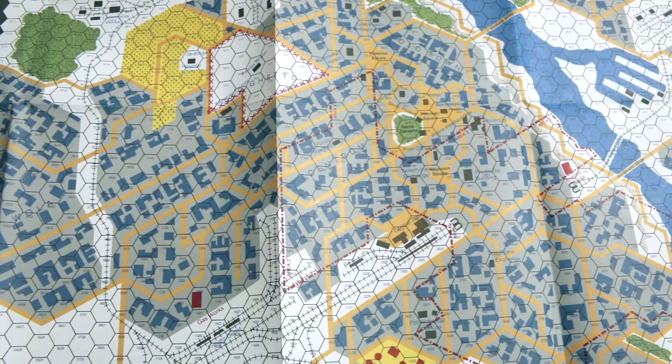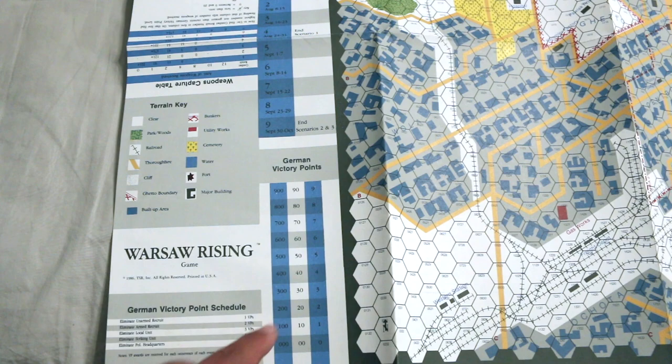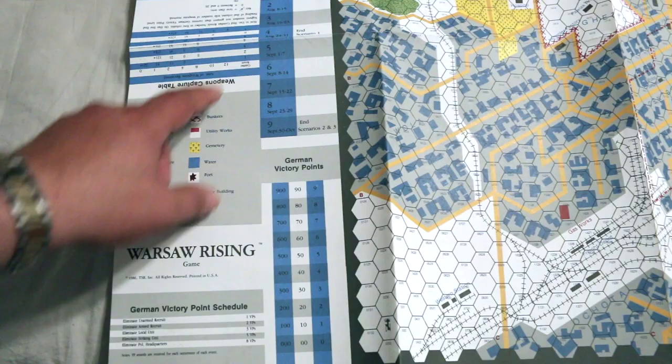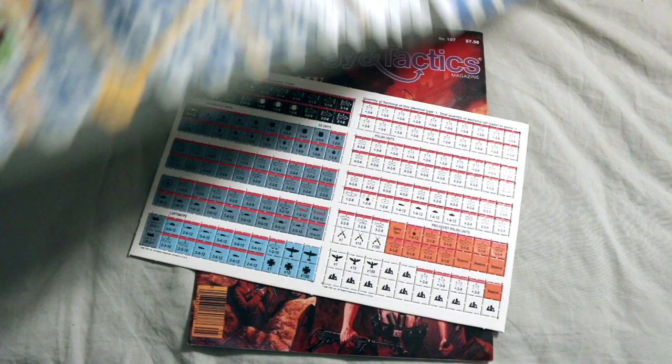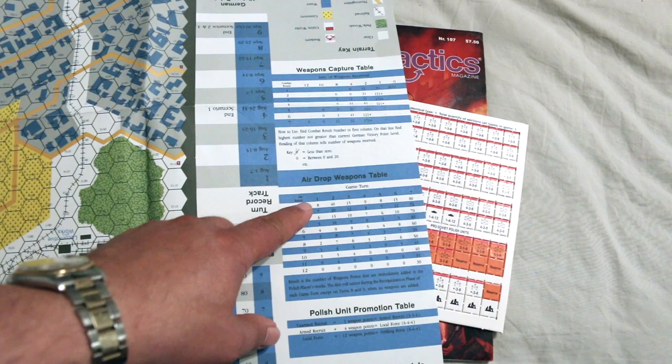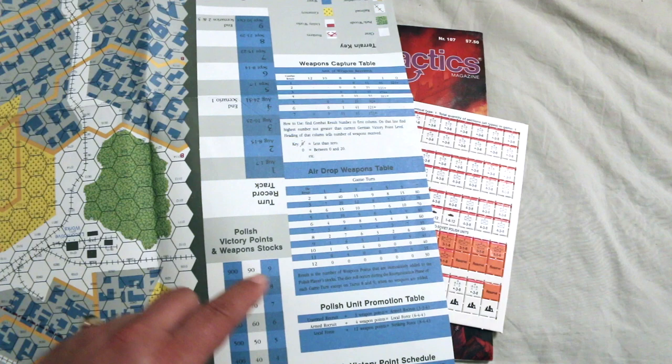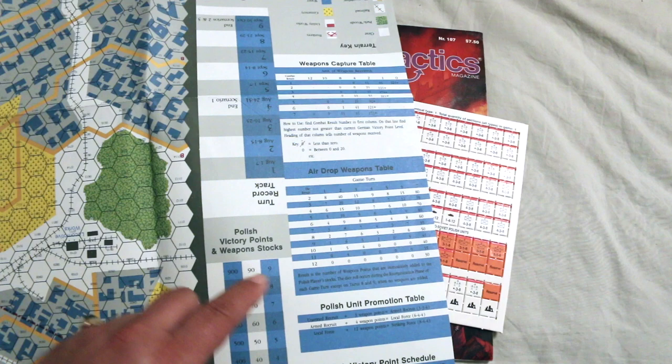Nice. I really like the way this map looks. And here you can keep track of the German victory points. And here's the German victory points schedule. Terrain key right on the map. Very good. Turn record track on the map. That's good. This other side here is for the other player to see. Weapon capture table. That's cool. Air drop weapons table. Polish unit promotion table. Polish victory points schedule. And Polish victory points and weapons stacks.